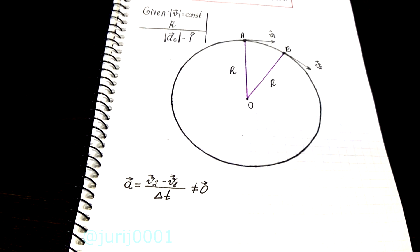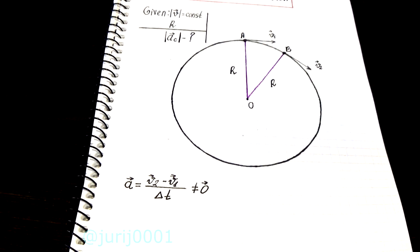But in fact this is not the case because the speed is a vector quantity. And as you can see in the figure, the vectors V1 and V2 are not the same.